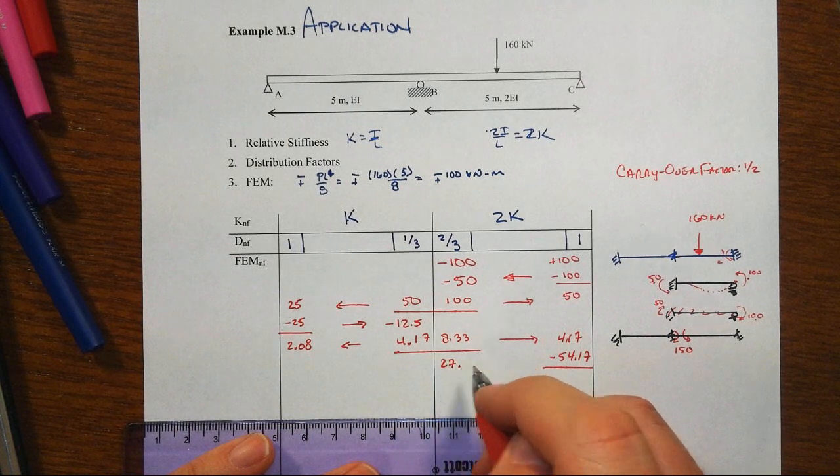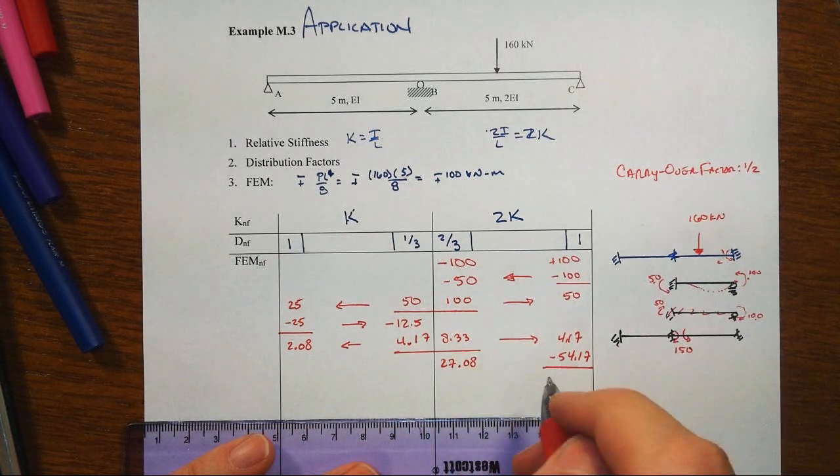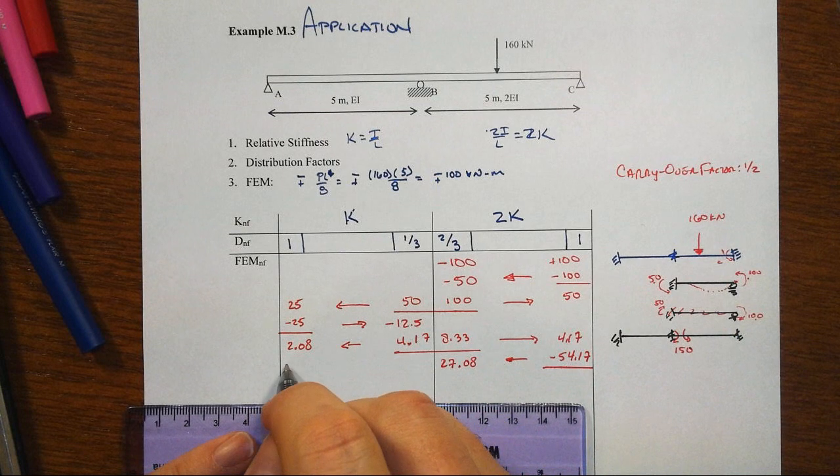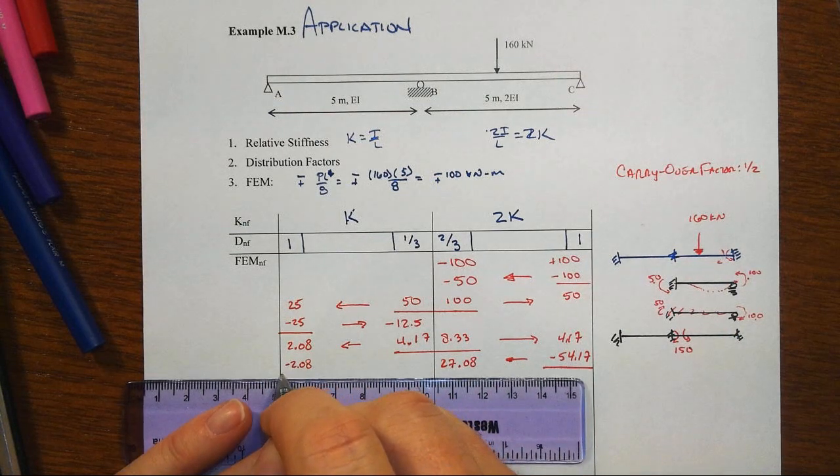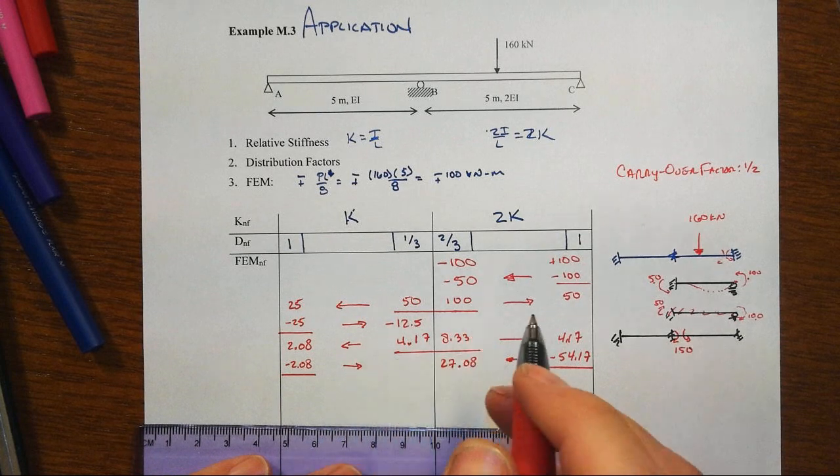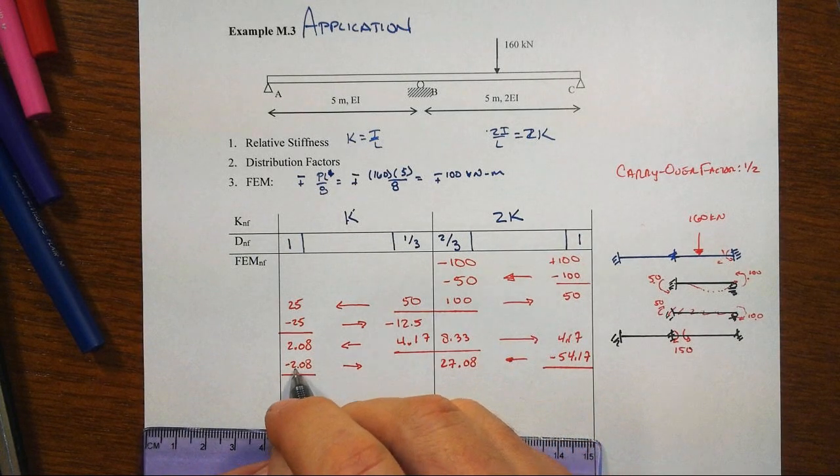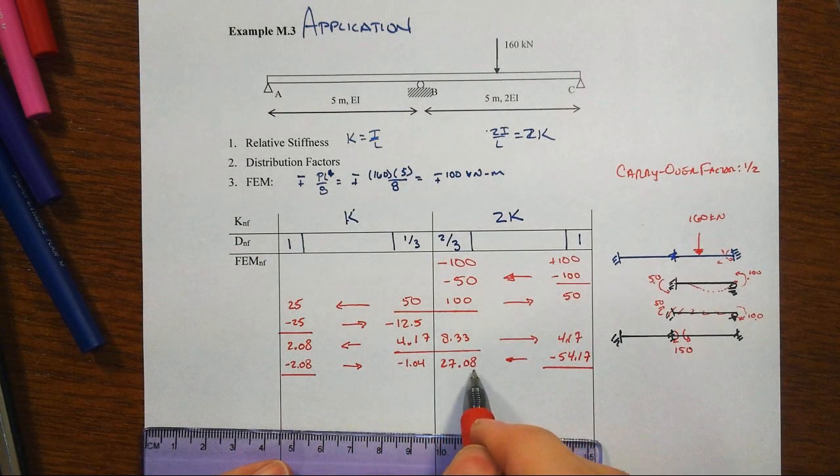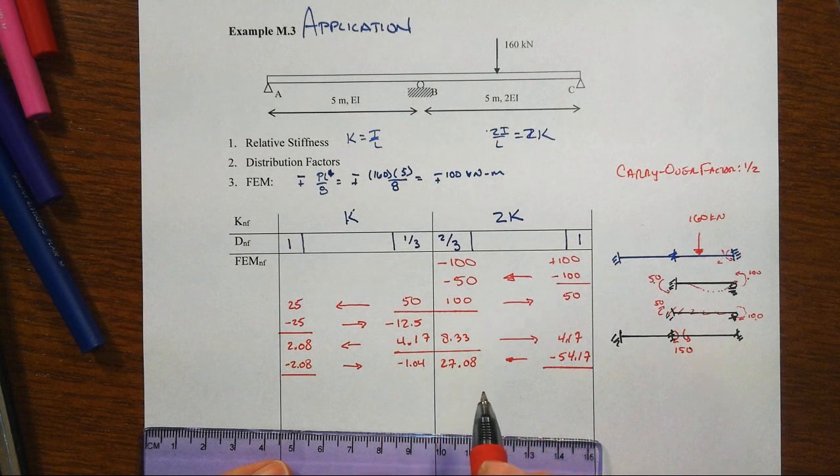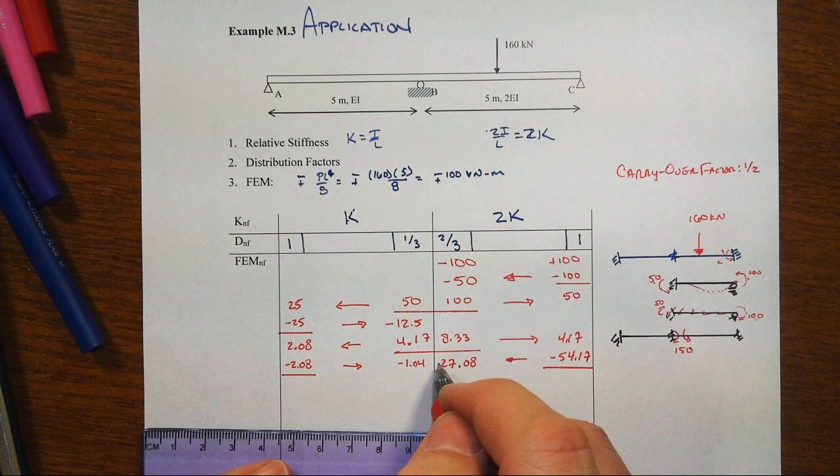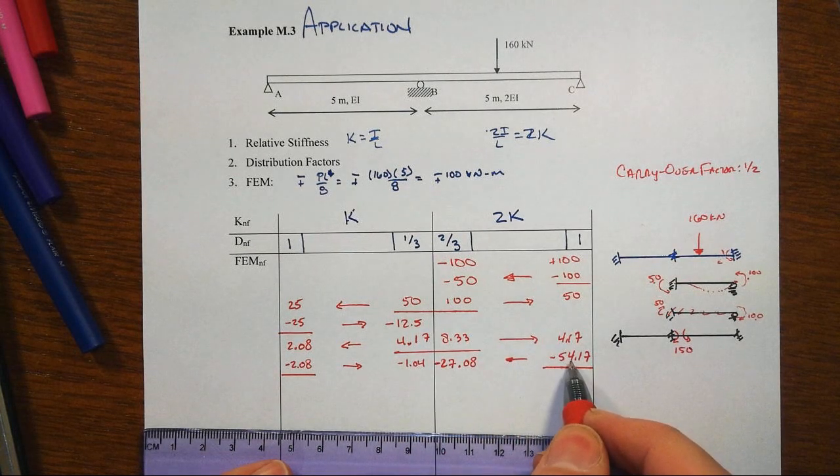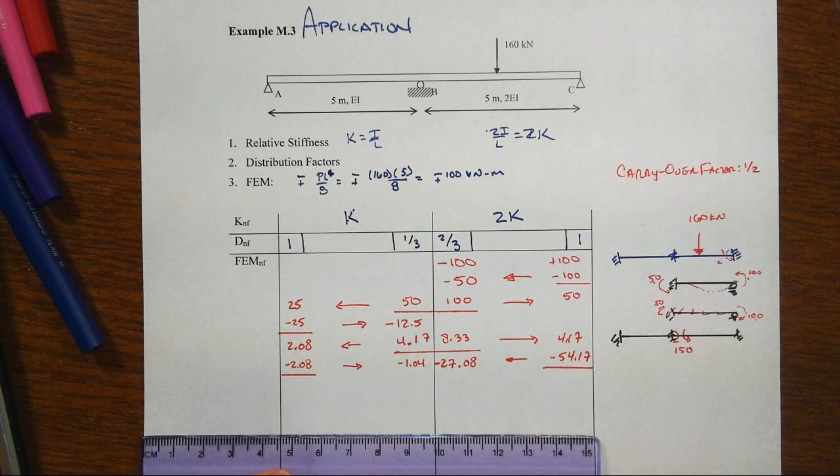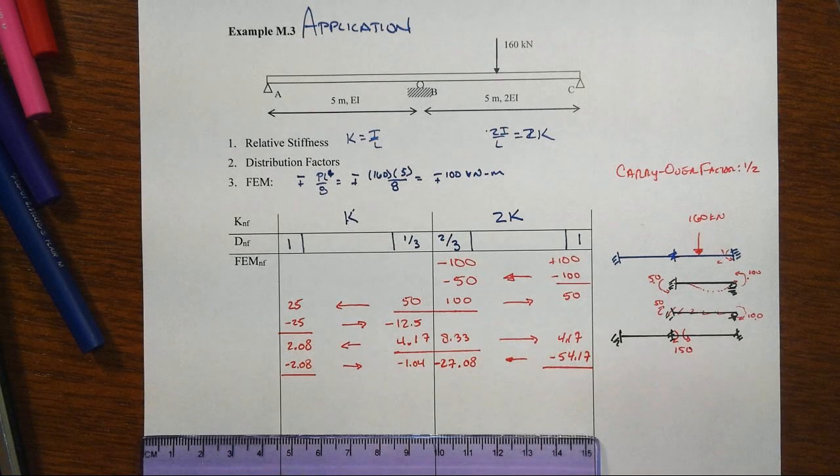Now note the total buildup since the last time I released this joint is starting to get pretty big. It would be a good idea to go ahead and pop that one. Remember, we're just alternately releasing and then letting things come to equilibrium, redistributing their effects with the carryover. That becomes 27.08. You're going to ask, how many digits should I be carrying? I usually don't even go to the hundredth here, which does introduce some numerical error. But generally, it's not that big a deal at the tenth of a kilonewton meter. Minus 2.08 comes back over here as minus 1.04.